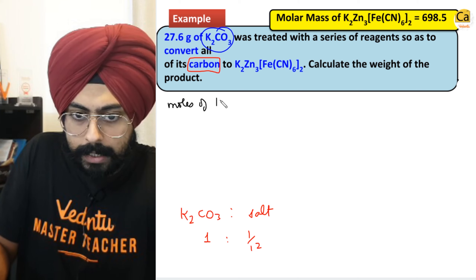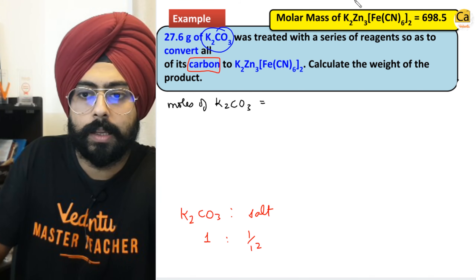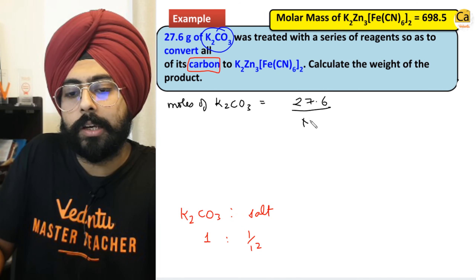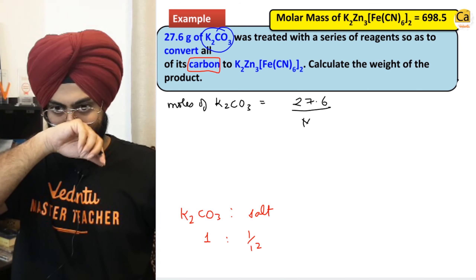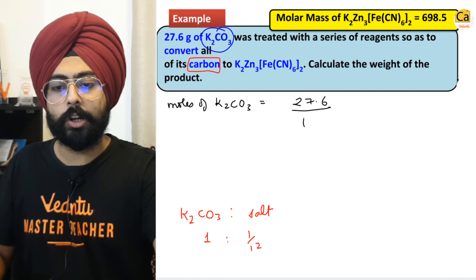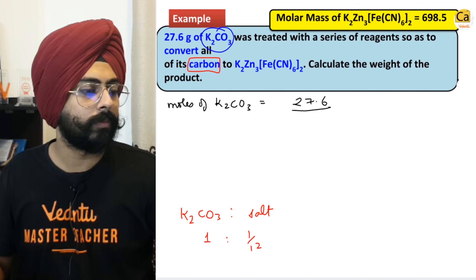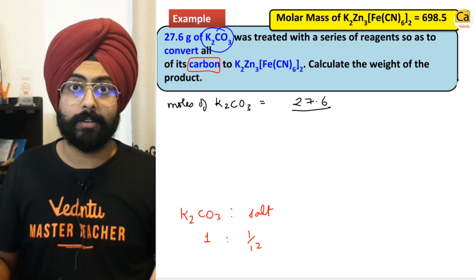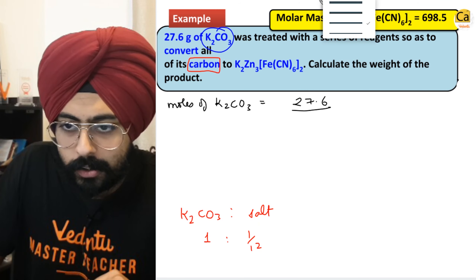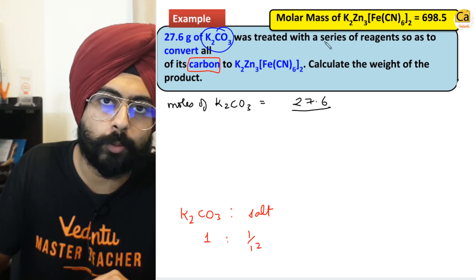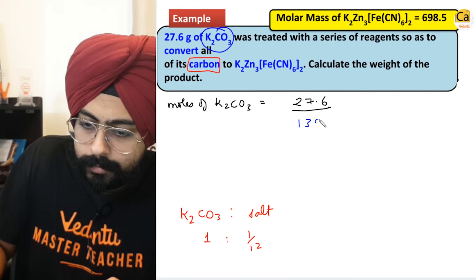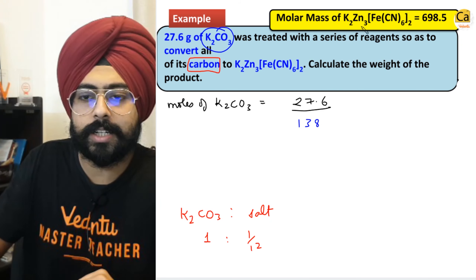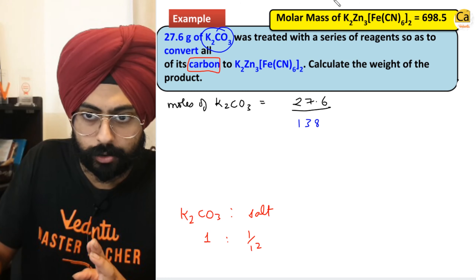Moles of K2CO3 are equal to given weight (27.6) divided by molecular weight of K2CO3. The molecular weight of K2CO3 comes out to be 138. So 27.6 divided by 138 gives the number of moles of K2CO3.